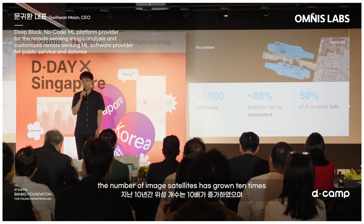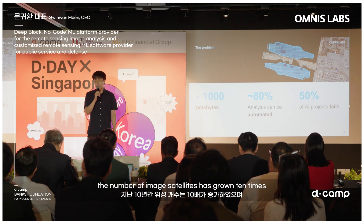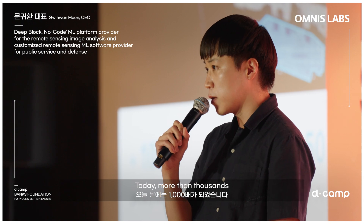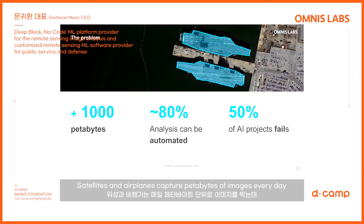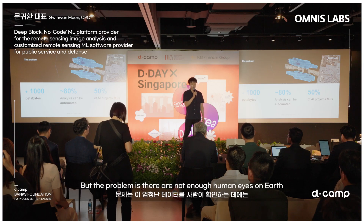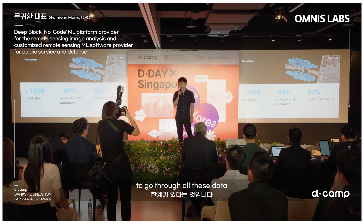Over the last 10 years, the number of imaging satellites has grown 10 times. Today, more than thousands of satellites and aircrafts capture petabytes of images every day. But the problem is there are not enough human eyes on Earth to go through all this data.